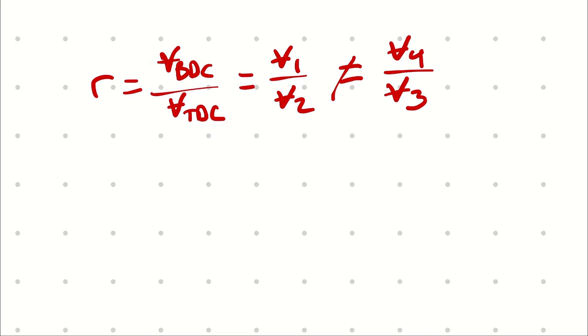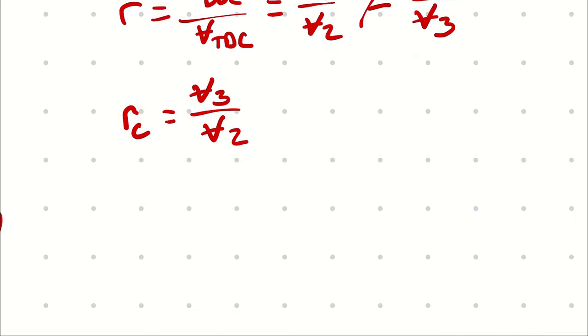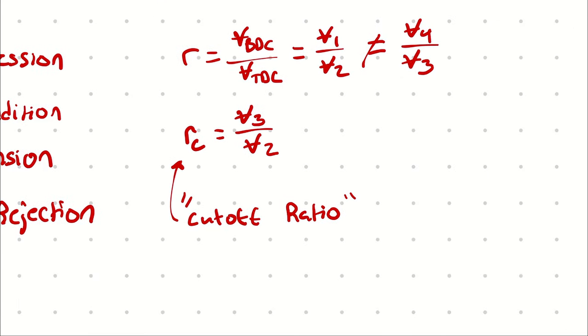To provide some comparison between these, we can also describe another volume proportion, and that represents v3 over v2. And this we call the cutoff ratio. And the cutoff ratio represents the amount of volume change, the proportion of volume change, during the combustion process. It essentially means how long did the fuel take to inject.